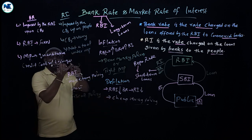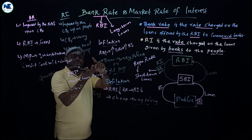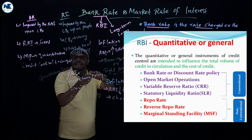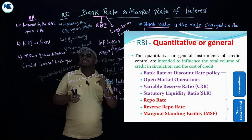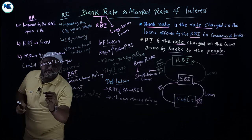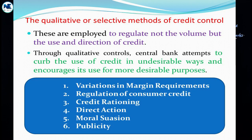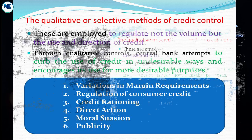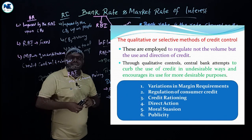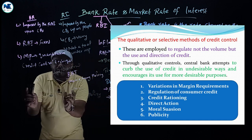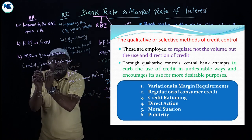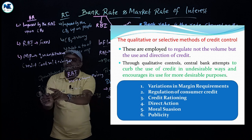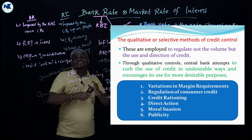Under quantitative credit control techniques, the tools include bank rate, CRR — Cash Reserve Ratio, SLR — Statutory Liquidity Ratio, Repo Rate, Reverse Repo Rate, Open Market Operations, MSF — Marginal Standing Facility, and so on. The second type is qualitative, also called selective credit control techniques, which includes marginal requirements, moral suasion, and direct action. These affect particular sectors of the economy and are therefore called qualitative or selective credit control techniques.